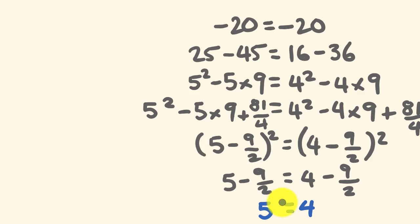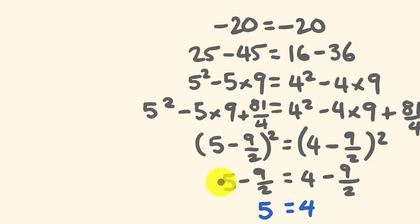So did you spot where the lie was inserted — where the problem was? Go through the working out and see if you can spot it. The fallacy is to do with positive and negative roots, and the problem occurs at this particular step here, where I go from the squared form and take the square root.